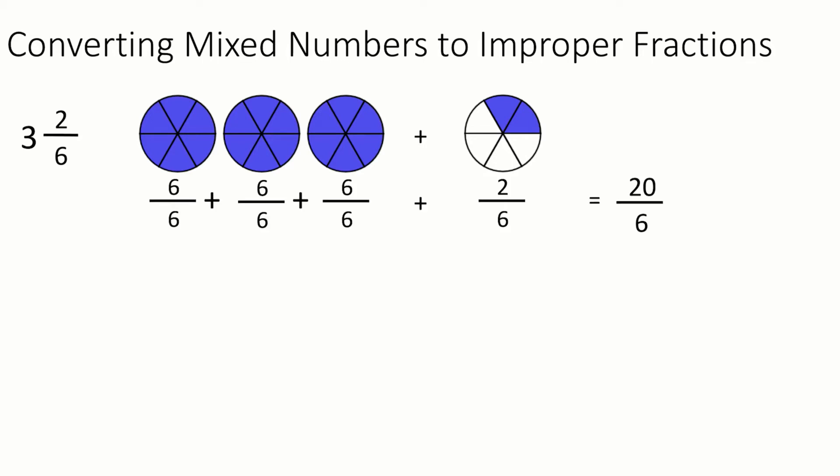So that looks like 6 over 6 plus 6 over 6 plus 6 over 6 plus 2 over 6. Now, when we're adding that together, we can actually see that we have these 3 whole pieces. But that means we have 6 pieces each time we have a whole.